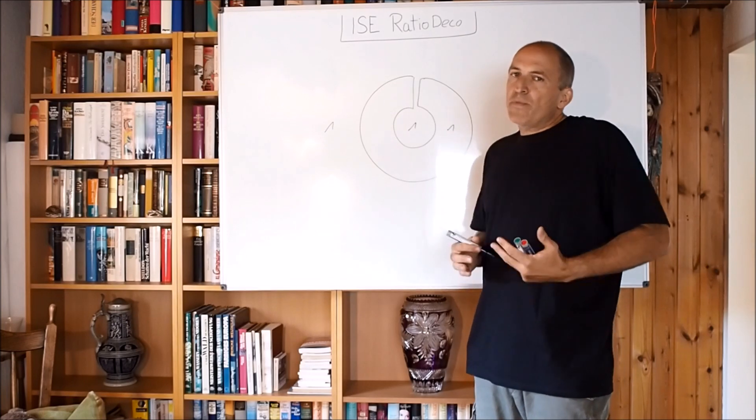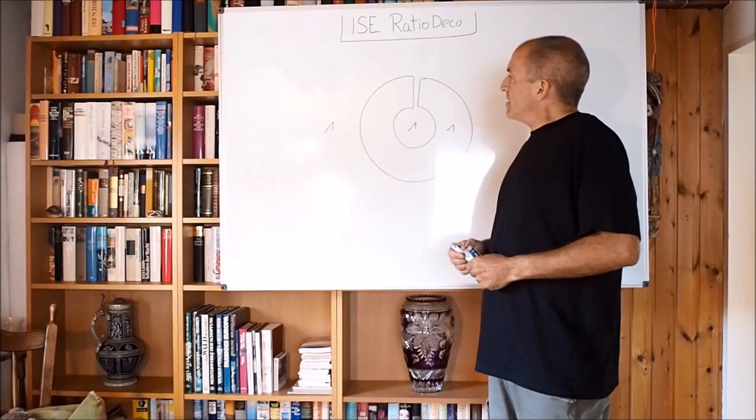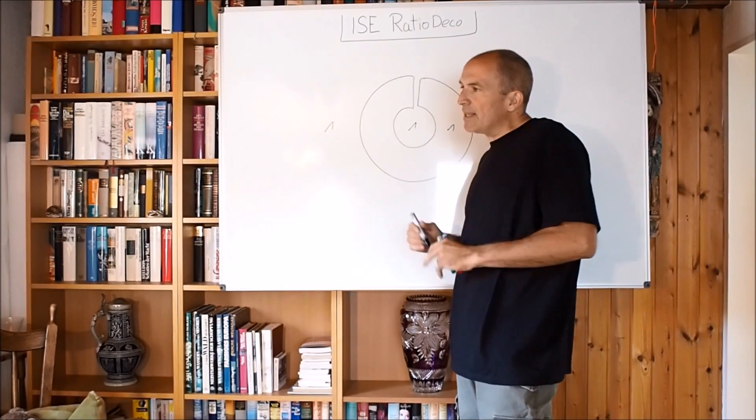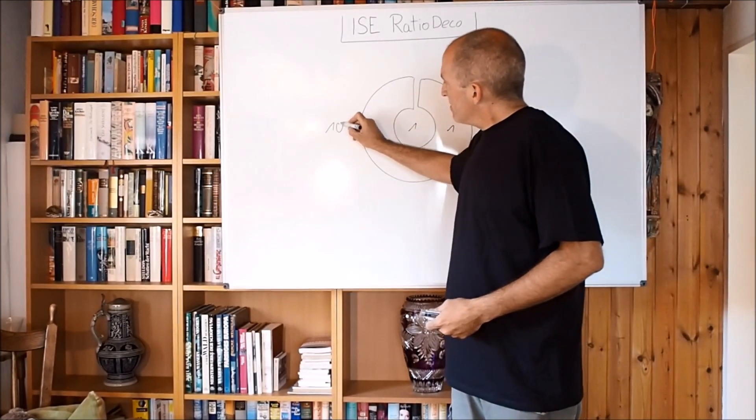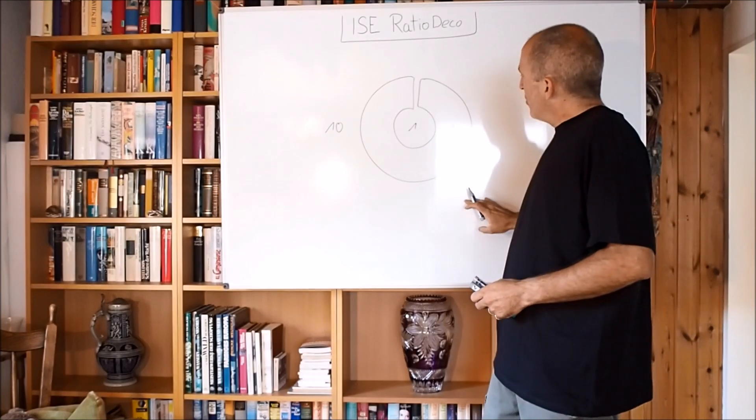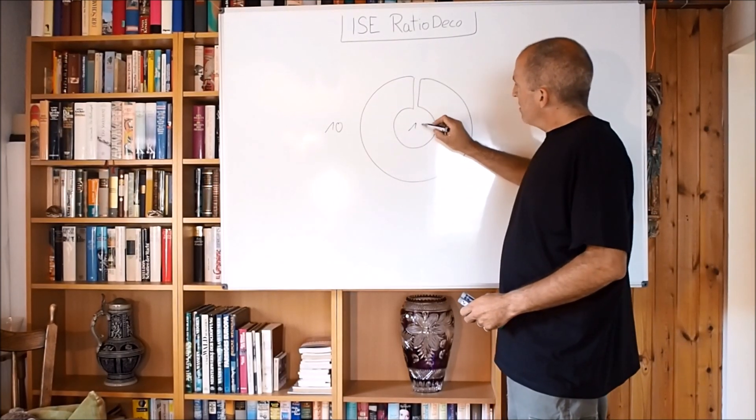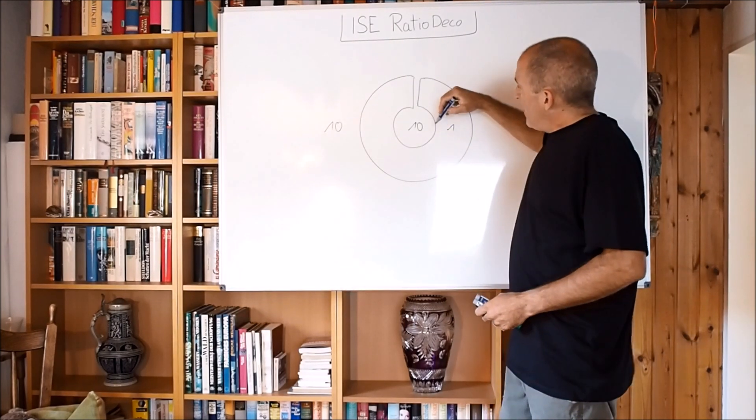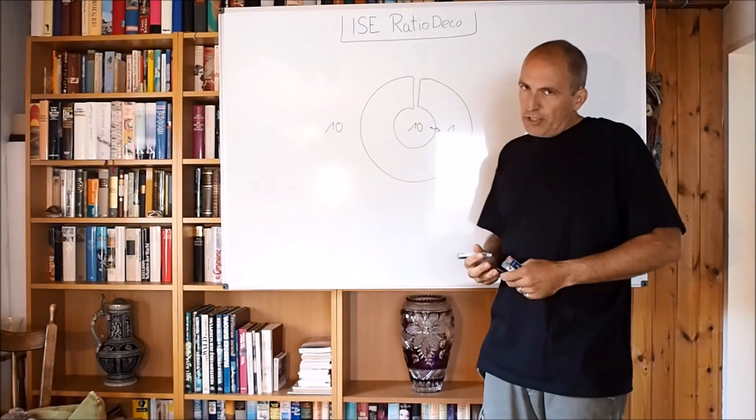And so now what happens when we dive is that we increase the pressure here. So just to make it simple, let's say we go to 90 meters, that means 10 bars. Just makes it easy for me on the board. So now we have 10 bars on the outside and obviously we have 10 bars on the inside, and what happens is that gas starts to travel into our body, into our tissues.